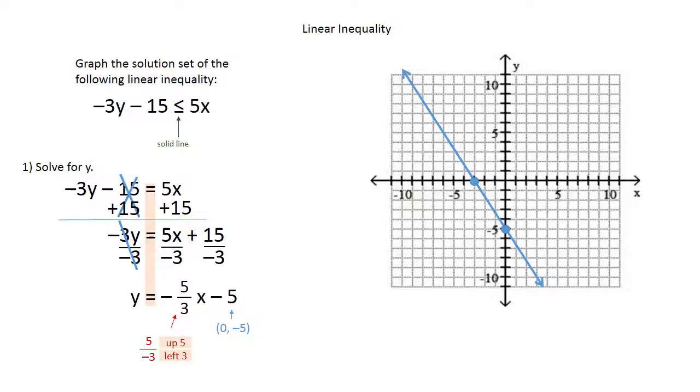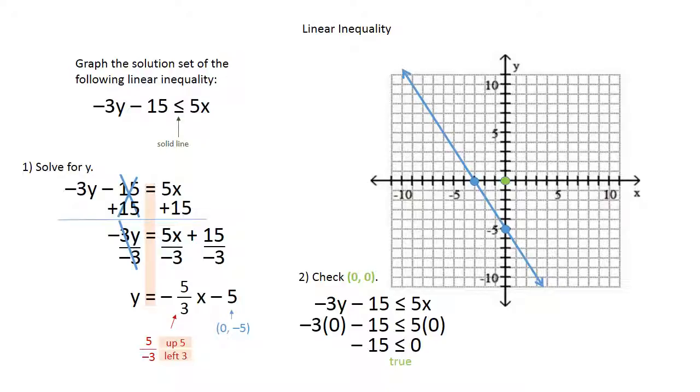The last thing I need to do is check to see which side I have to shade. So I'm going to check my 0, 0 point and locate that on my graph. I see that's on the right-hand side of the line. Take the original equation with the inequality and plug those 0s in for x and y. After I get rid of the 0s and simplify, I'm left with negative 15 is less than or equal to 0. That's actually true because negative numbers are less than 0. Because that's true, my 0, 0 is true, and I am able to shade the right side of the line.